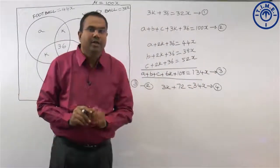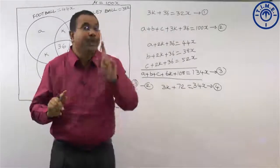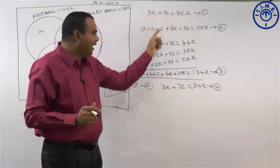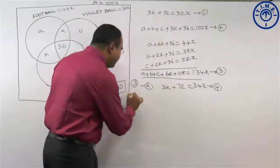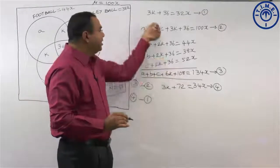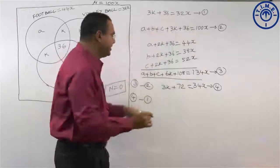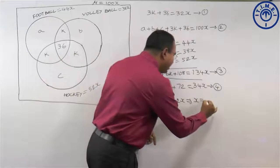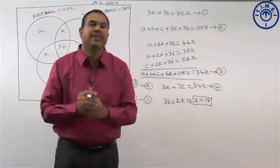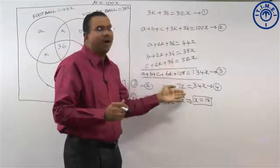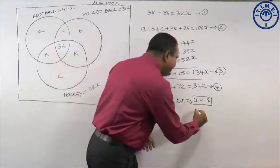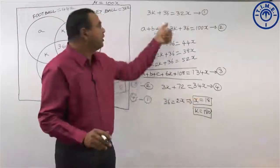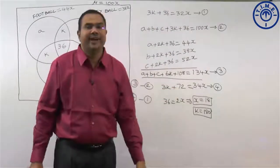We need to find X and K values. Let us solve equation 4 minus equation 1. 3K cancels out. 72 minus 36 is 36, equals 34X minus 32X which is 2X. So X equals 18. Substituting X equals 18 into equation 1, we get K value equals 180.